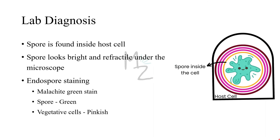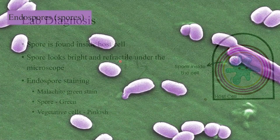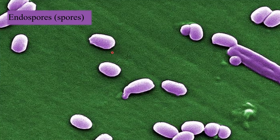Lab diagnosis: spores are found inside the host cell. This is normally not the case because the conditions inside the human body are favorable to bacterial growth and survival, so the spore will be converted into bacteria and cause infection. Spores are normally formed in the outside environment — on instruments in hospitals like endoscopes, catheters, surfaces of tables, beds, floors, and walls. When they get into the human body via instruments during procedures, they are found inside the host cell. We retrieve them and go for microscopy. Spores look bright and refractile under the microscope. We also do endospore staining using malachite green stain — spores stain green while vegetative bacterial cells stain pink.